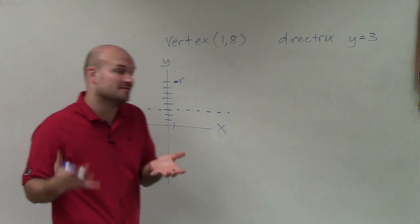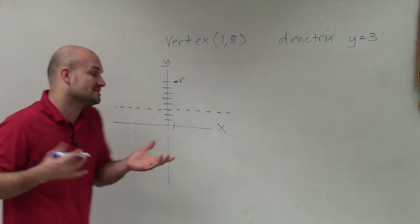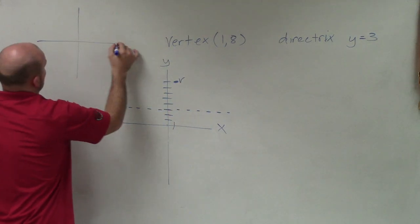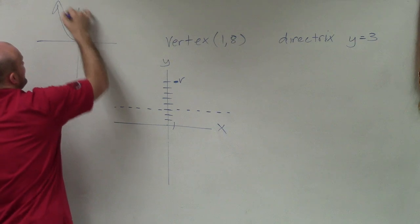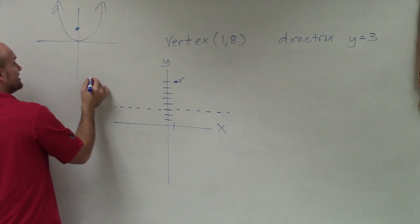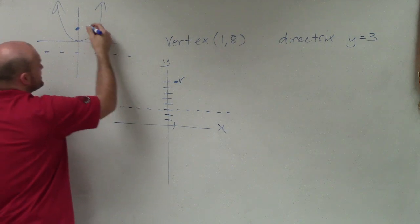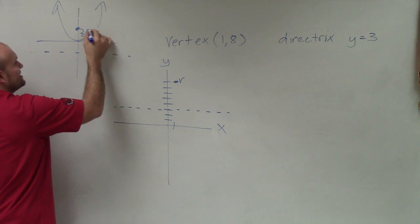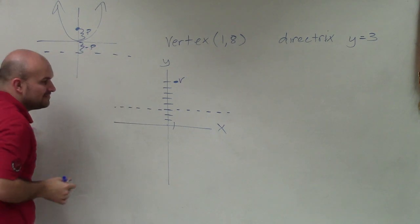Now if you remember the parabola dealing with the focus and the directrix, let's just kind of look at, let's say here's a parabola. The focus is always inside the parabola. And the directrix is the exact same distance. As this distance is p, this distance is negative p.